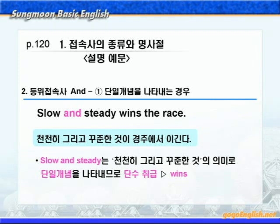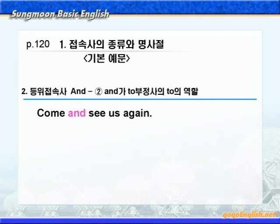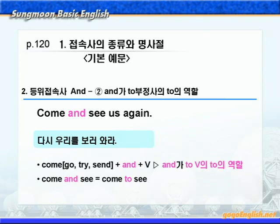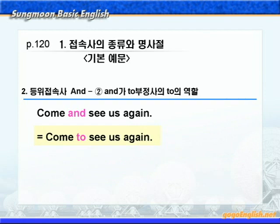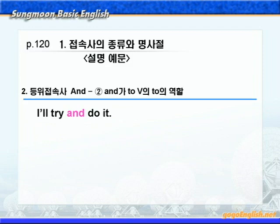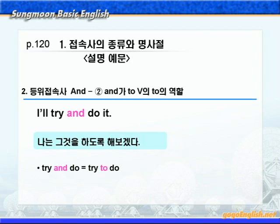다음 2번, and가 to부정사의 to의 역할을 하는 경우가 나옵니다. 'Come and see us again.' 해석은 다시 우리를 보러 와라 이런 뜻인데요. come, go, try, send 같은 동사 다음에 and 플러스 동사원형 이런 형태가 되면 and가 to부정사의 to의 역할을 하게 됩니다. 다시 말해 여기 and는 to의 역할로 'come and see'는 'come to see'와 같은 말이 되는 것이죠. 다음 'I'll try and do it.' 나는 그것을 하도록 해보겠다. 역시 try and 동사원형 형태니까 here and는 to로 바꿔 쓸 수 있습니다. 그래서 'try and do'는 'try to do'이렇게 되겠죠.